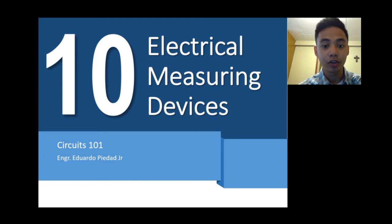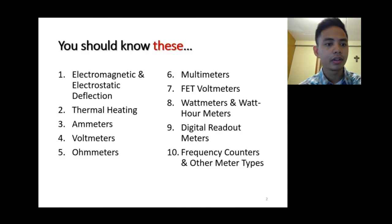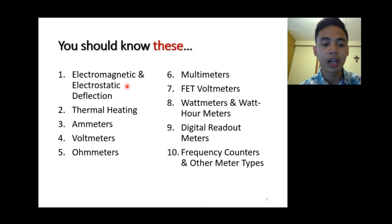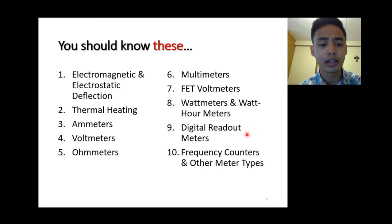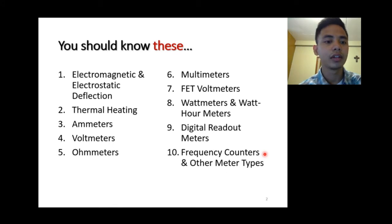We're going to talk about 10 electrical measuring devices. The topics include the principles of electromagnetic and electrostatic deflection, thermal heating, ammeters, voltmeters, ohmmeters, multimeters, FET voltmeters, watt meters, and VAR meters. Most residential houses have digital readout meters, and there are also other types such as frequency counters.